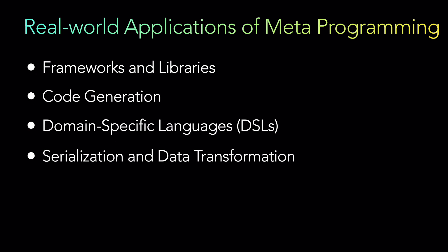Next is serialization and data transformation. Metaprogramming plays a crucial role in serialization and data transformation frameworks. These frameworks allow objects to be serialized in various formats like JSON or XML, or transformed between different data structures. Libraries like Jackson and Gson employ metaprogramming techniques to analyze object structures at runtime and generate serialization and deserialization code dynamically.